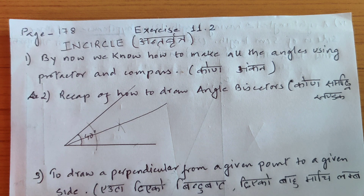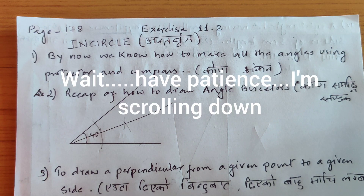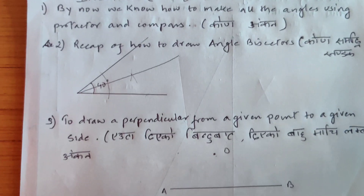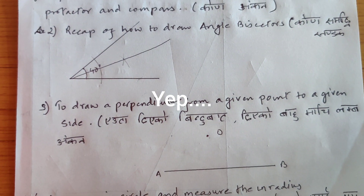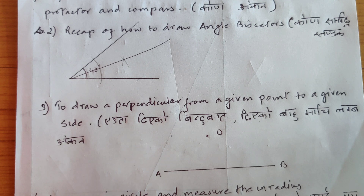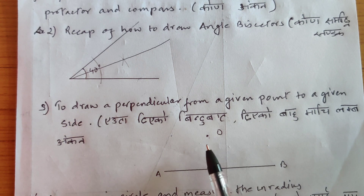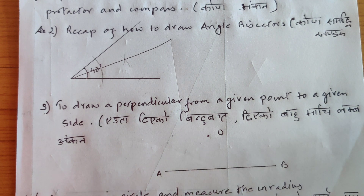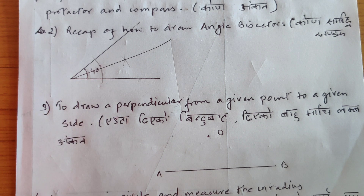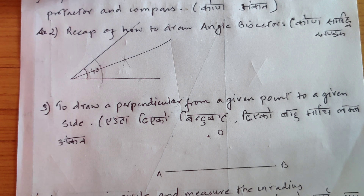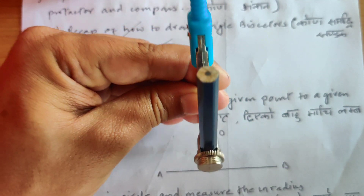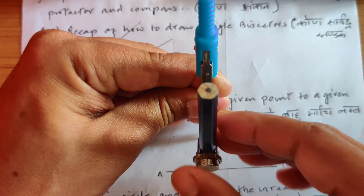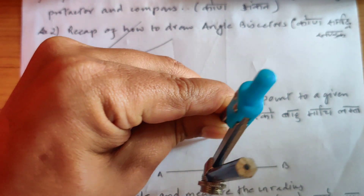Thirdly, let's learn how to draw a perpendicular from a given point to a given side. O is the given point and AB is the given side. We need to draw a perpendicular from a given point to a given side — these are basically the two things we'll need in this construction.